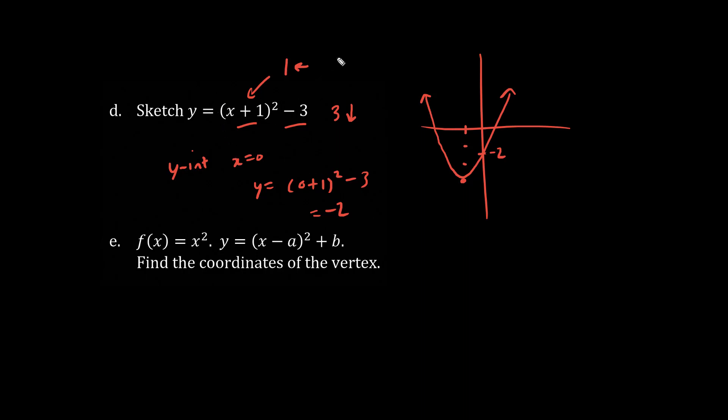By the way, for this parabola, the vertex, the coordinates of the vertex, is revealed by these numbers. We choose the opposite of this number, which is -1, and we choose the same value as this shift down, which is -3. So the vertex coordinates are (-1, -3).